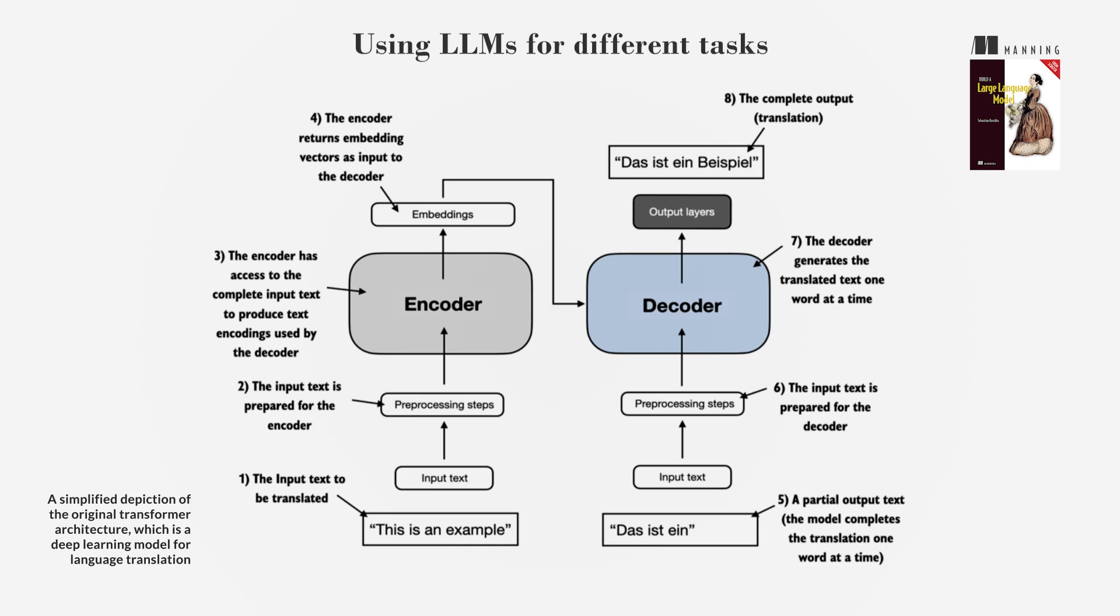LLMs are based on the transformer architecture, which uses self-attention and includes an encoder and a decoder module connected to each other. This structure helps the model understand text relevance and relationships.